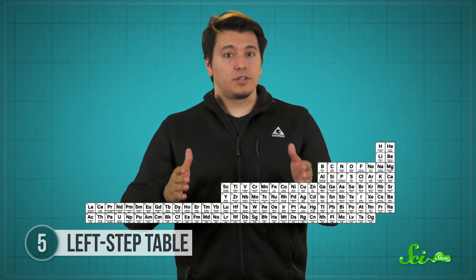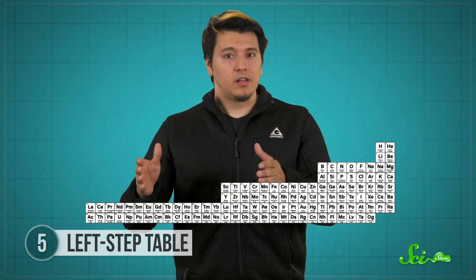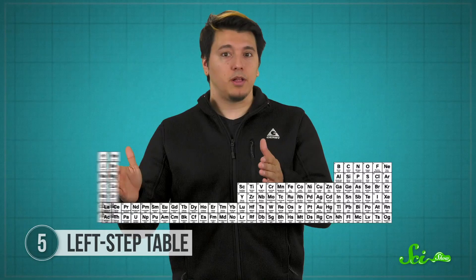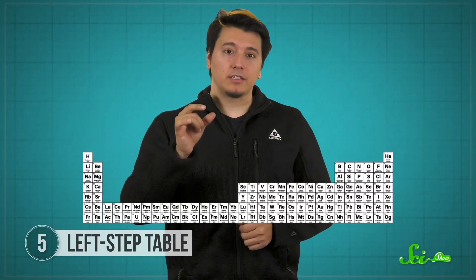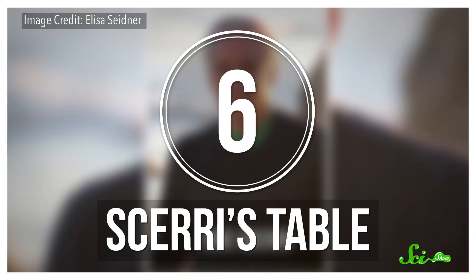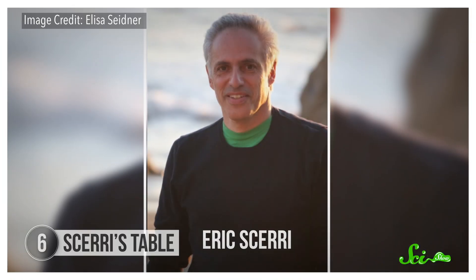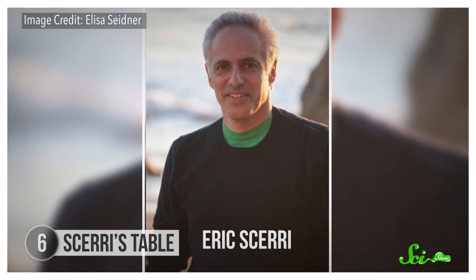To convert the left step arrangement to the standard table, all you have to do is shift the S block from the left side to the right and move helium to be next to hydrogen. That makes sense if you're thinking about electron configurations: hydrogen is 1s1, and helium is 1s2. That might seem like a small change, but people will probably tinker with a periodic table forever. In 2006, chemist Eric Scerri proposed a new table based on the left step design, but a touch more aesthetic.